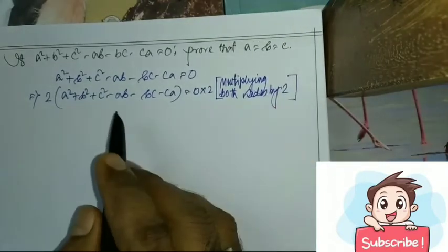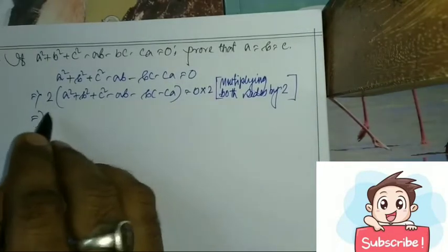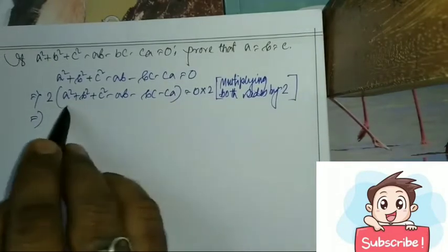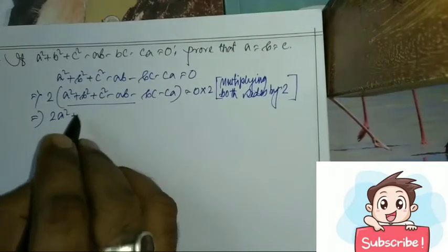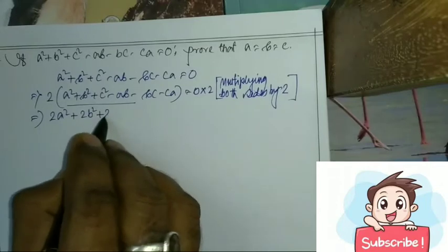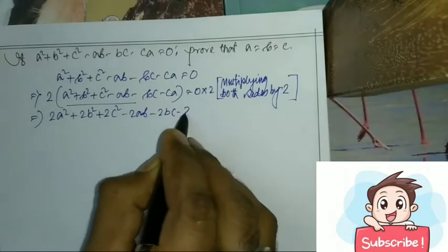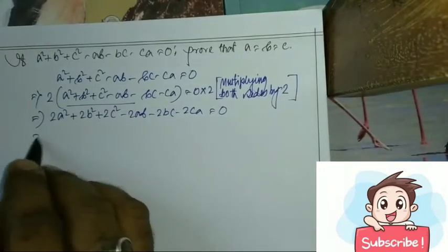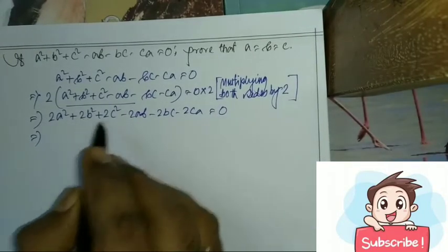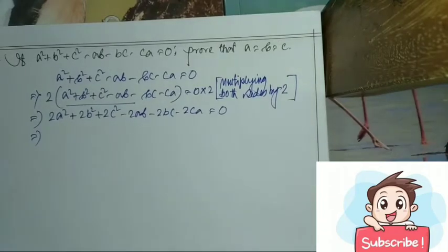Multiplying both sides by 2, we get: 2a² + 2b² + 2c² - 2ab - 2bc - 2ca = 0.